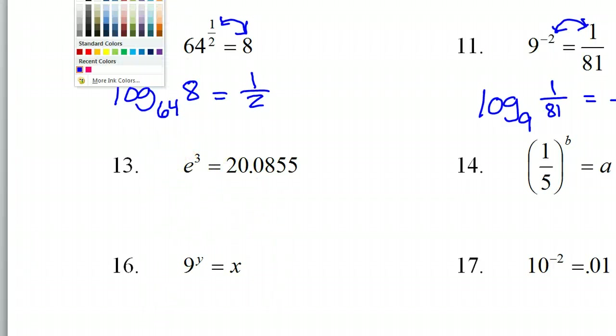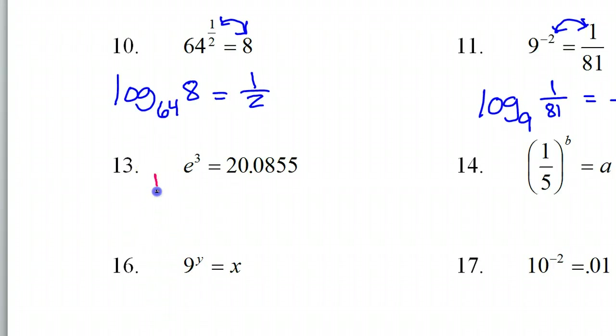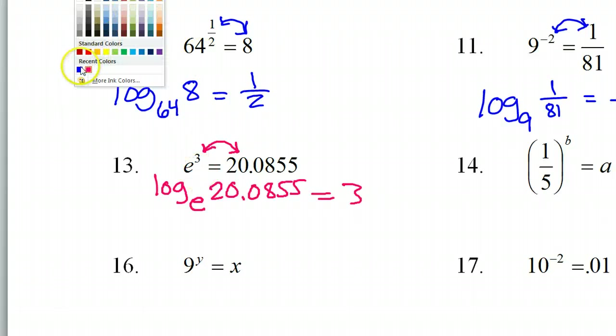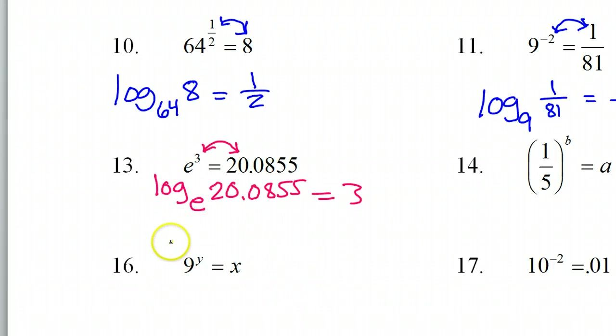Normally we would go log base e. And then these two would kind of switch places. So log base e 20.0855. And that would equal 3. But you're not supposed to ever put log base e. This is one that we're supposed to simplify somehow. And log base e is the natural log. Log natural. So we're supposed to put ln instead of log base e. So natural log 20.0855 equals 3.